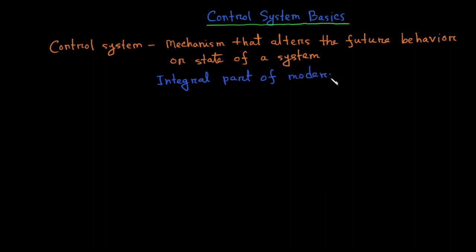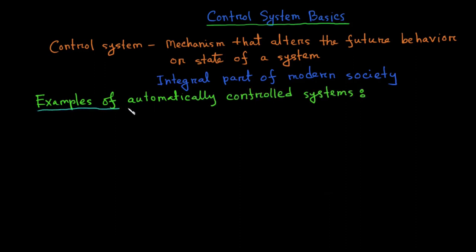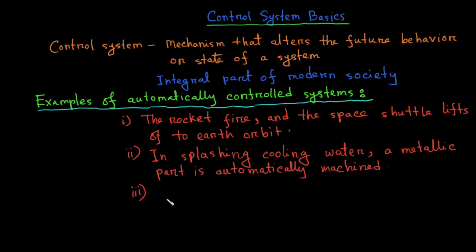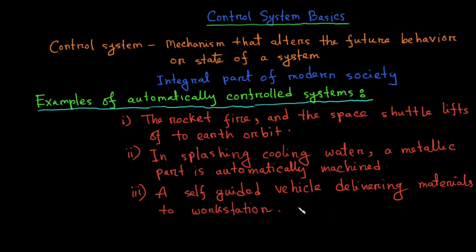Control systems are an integral part of modern society. Numerous applications are all around us. Some of the automatically control systems are the rocket fire and the space shuttle lifts off to earth orbit. In splashing cooling water, a metallic part is automatically machined. A self-guided vehicle delivering materials to workstations in an aerospace assembly plant glides along the floor seeking its destination. These are just few examples of automatically control systems that we can create.